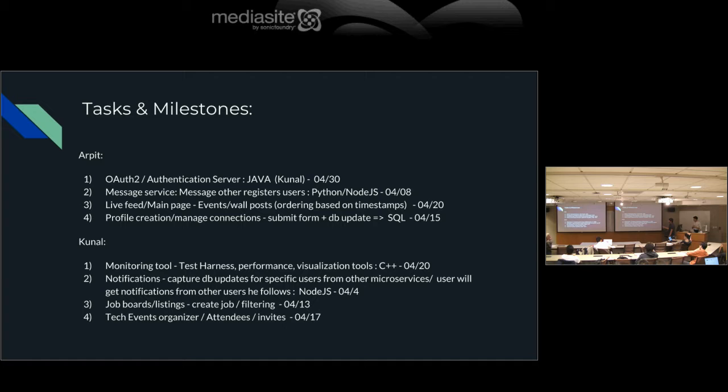This is how we're splitting tasks. Arpair's main priority is the authentication server, with help from the team. The messaging service, live feed, and profile creation will be finished in the next two to three weeks. The main priorities for the other team member are the monitoring tool and other services, to be finished within the next two weeks. Focus is on monitoring and authentication first.